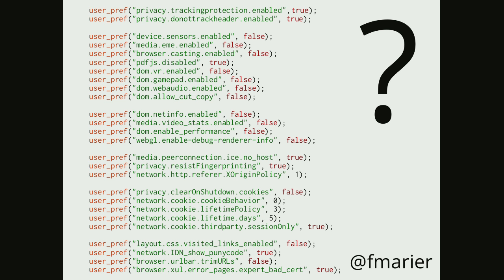The question is about Uber and how they are tracking users on Apple phones even after people uninstall the app. I don't remember exactly what mechanism they were using there — I did see the article, but I think that's very specific to iOS. There's nothing in Firefox that we could do about that.